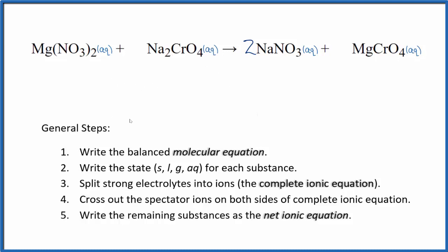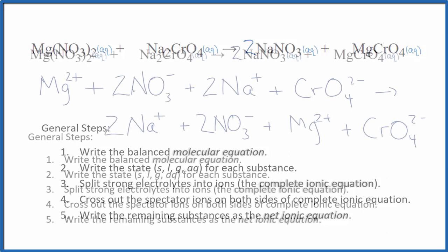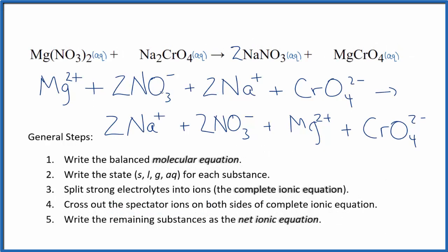If we wrote those out, that would give us the complete ionic equation. Now when we cross out the spectator ions, we have our reactants and our products.